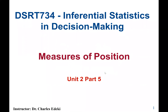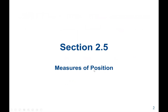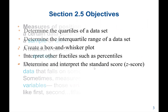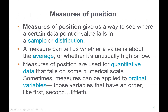These lectures cover the measures of positions. Our main objective is to learn how to determine the quartiles and interquartile range of a data set. We're also going to learn how to determine the z-score of a data set and also how to create a box and whisker plot. Measures of position normally give us a way to see whether a certain data point or value falls in a sample or a distribution, and can tell us whether a value is about the average or whether it's unusually high or low.